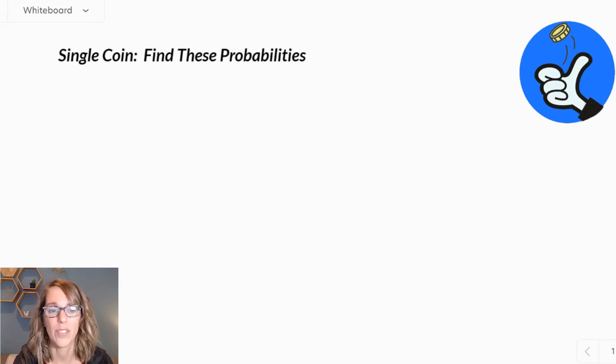We're going to start with a single coin. So with a single coin, you can either land on heads or the flip side of that coin would be to land on tails.